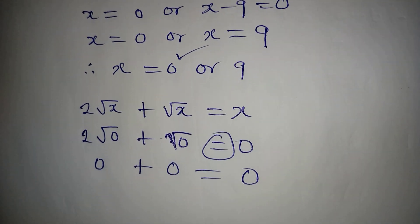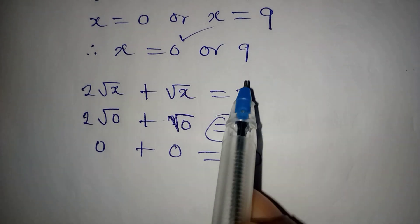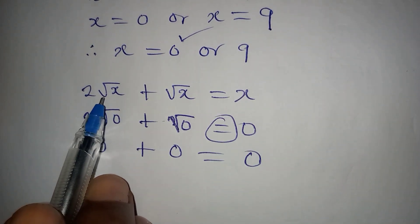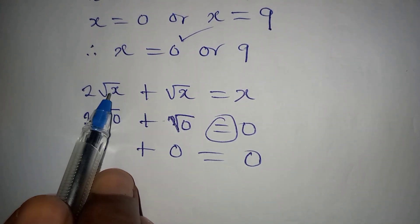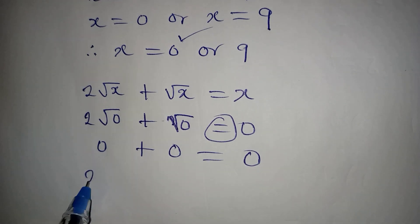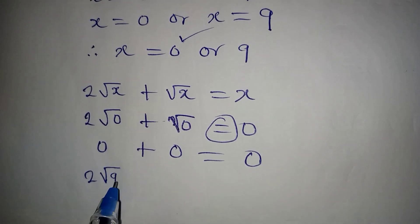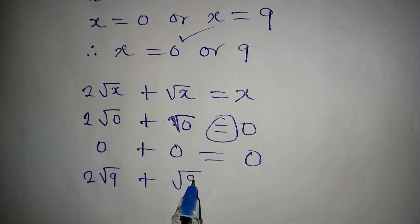Try the second value. In place of x we are going to put in 9, so we have 2√9 + √9.